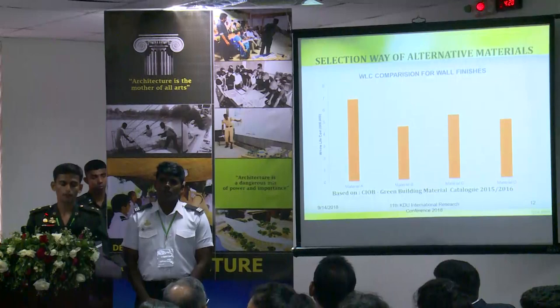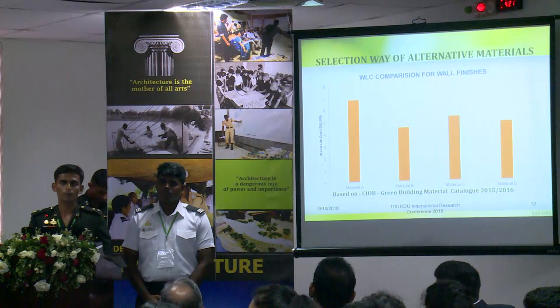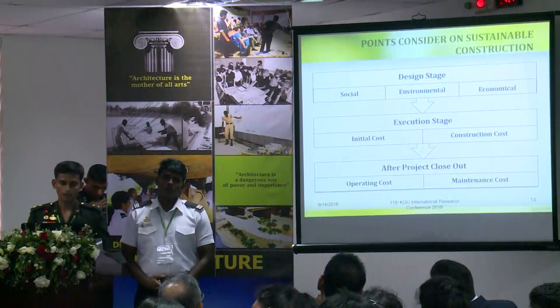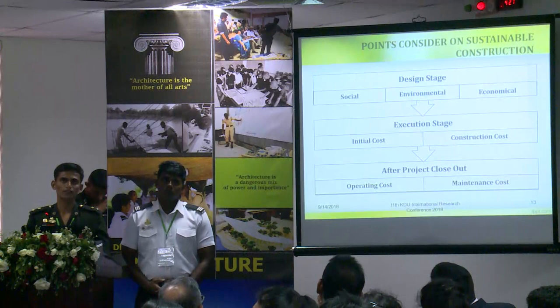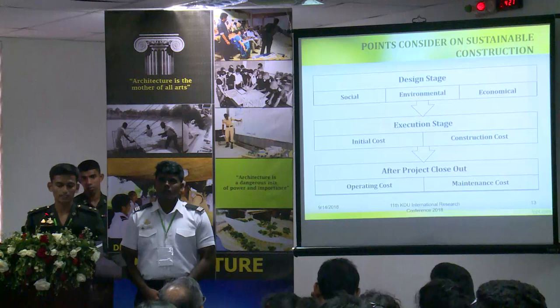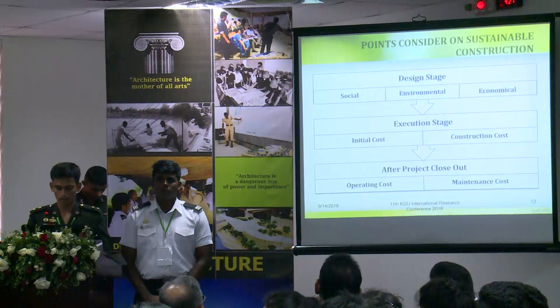Not only for this particular project, but for most sustainable constructions, we identified that most people have given importance to the design stage and execution. During the design stage, they give importance to the sustainability process — social, environmental, and economic factors — and at the execution stage, to the initial cost and construction cost. But most projects did not consider the operating costs and maintenance costs. Towards sustainable construction, if they give importance to all three of these factors, they can deliver good, sustainable buildings that achieve the expectations of sustainability.